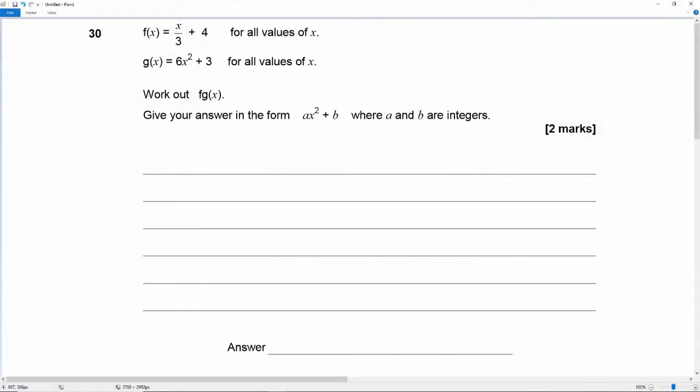And we pick it up in question 30 which reads: f of x is equal to x over 3 plus 4 for all values of x. g of x is equal to 6x squared plus 3 for all values of x. Work out fg of x. Give your answer in the form of ax squared plus b where a and b are integers.